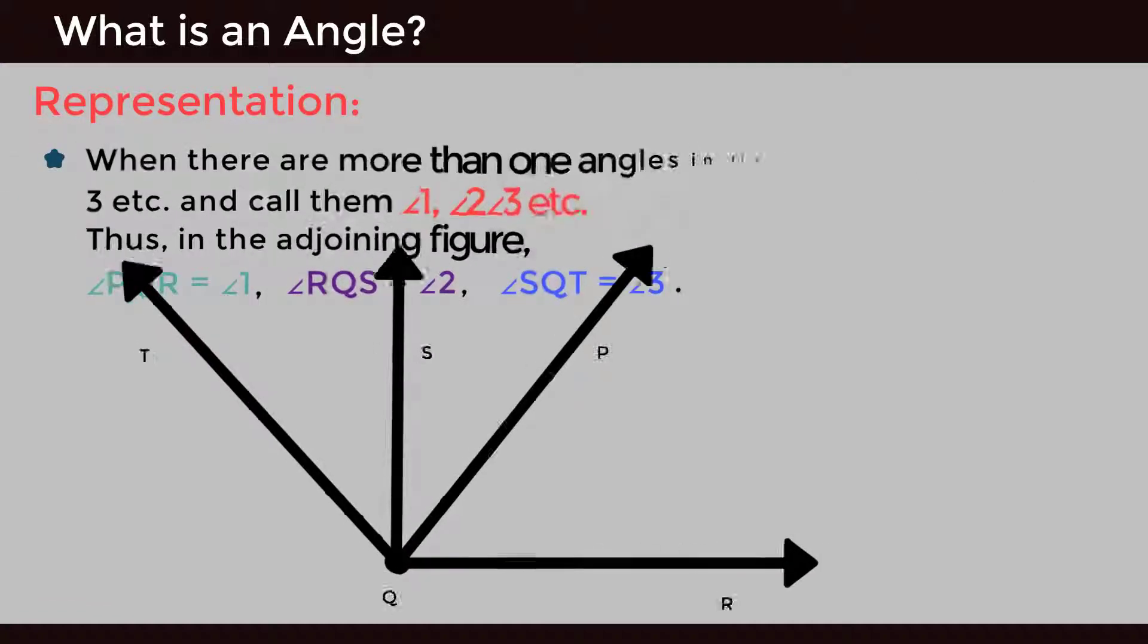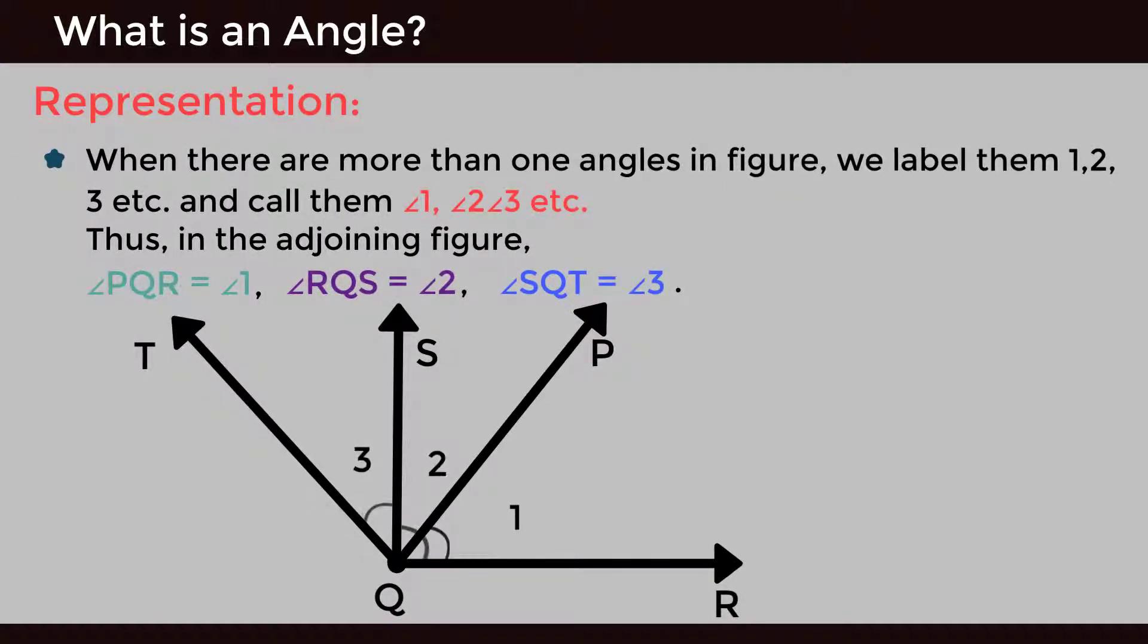When there are more than one angles in a figure, we label them 1, 2, 3, etc., and call them angle 1, angle 2, angle 3, etc.